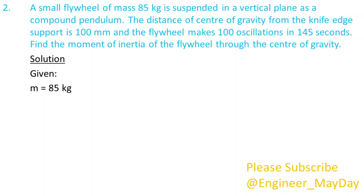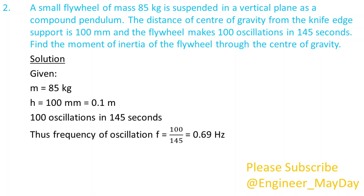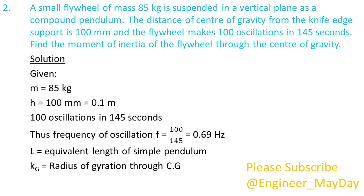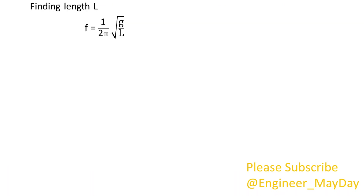Mass of flywheel M equals 85 kilograms. H equals 0.1 meters. 100 oscillations in 145 seconds, thus frequency of oscillation F equals 0.69 hertz. L equals the equivalent length of simple pendulum. Kg equals radius of gyration through center of gravity. Finding length L: L equals 0.525 meters.